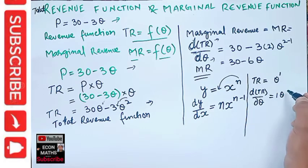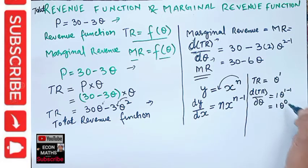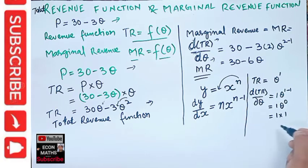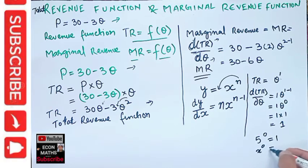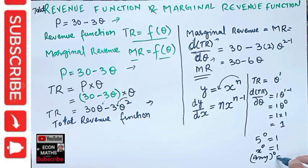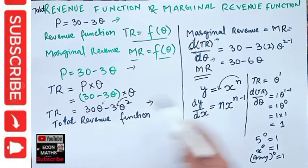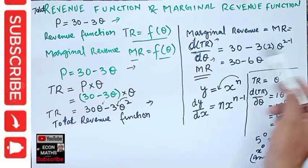Applying the power rule: 1 becomes the coefficient, and we get 1 times Q to the power 1 minus 1, which is Q to the power 0. Anything raised to the power zero equals 1, so 1 times Q to the power 0 equals 1 times 1 equals 1. That is how the derivative of Q equals 1. For example, 5 to the power 0 equals 1, and x to the power 0 equals 1 — anything raised to the power zero is 1.